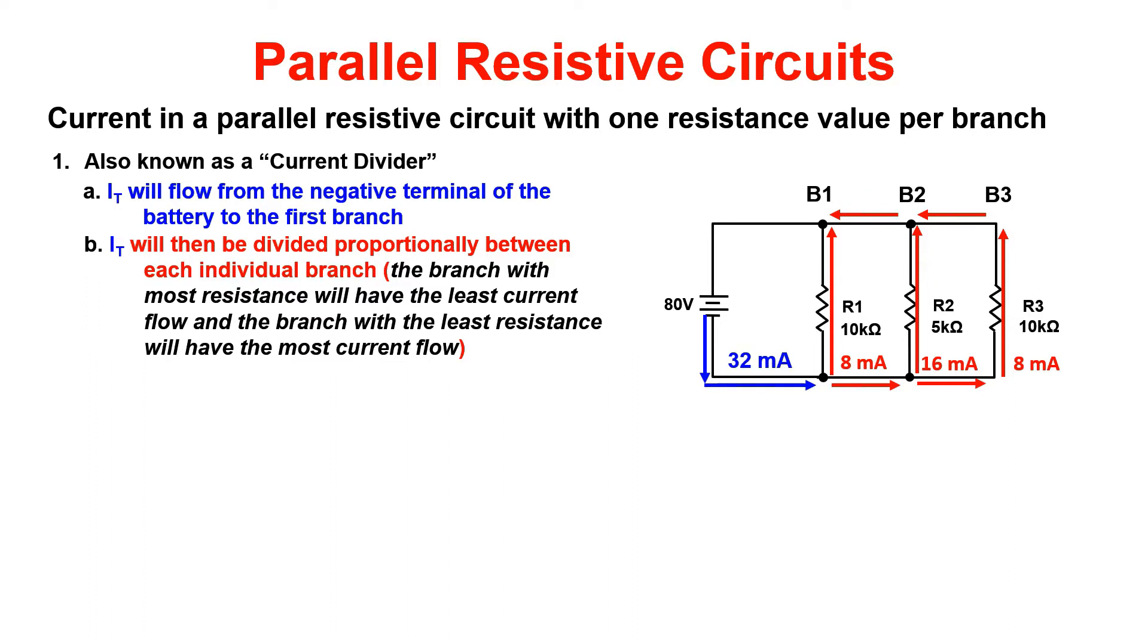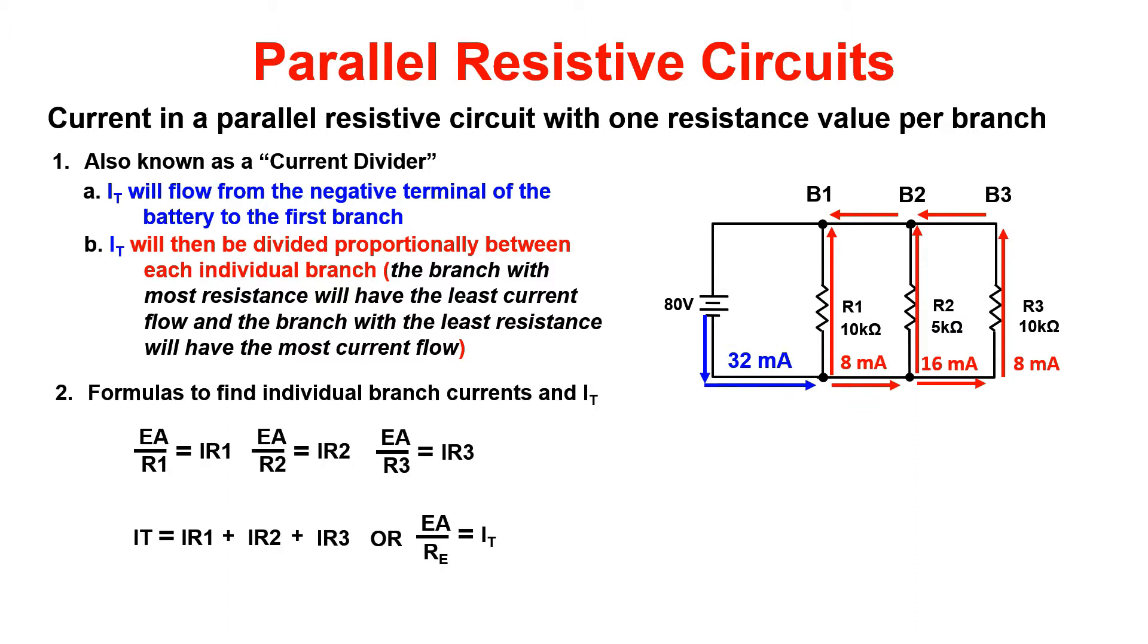We can use Ohm's law to find the individual current flow for each branch. We just take applied voltage and divide that by the individual resistance value of each branch. Applied voltage divided by R1 gives us the current for branch 1, and so on. Total current can be found by adding the individual branch currents together: IR1 plus IR2 plus IR3.